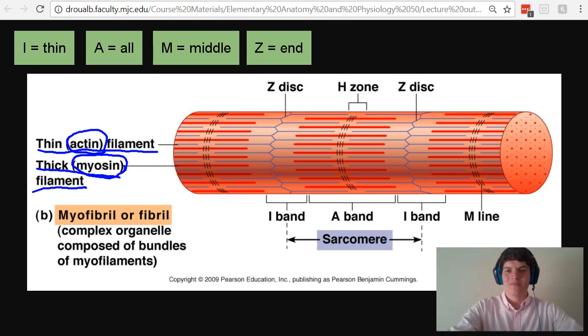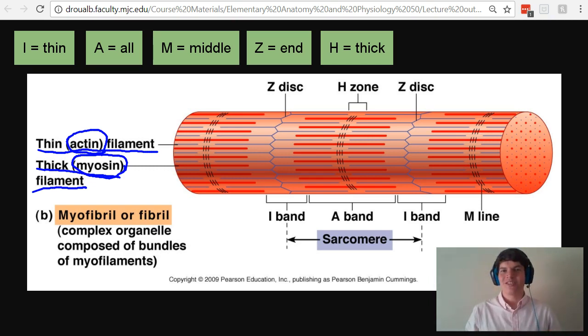Finally, we have the H-zone. H is a very thick letter compared to the letter I. Therefore, I think about it as having only the thick filament in it. I hope this gave you some really nice mnemonic devices to help you remember all this key terminology that comes in play when we think about a sarcomere.